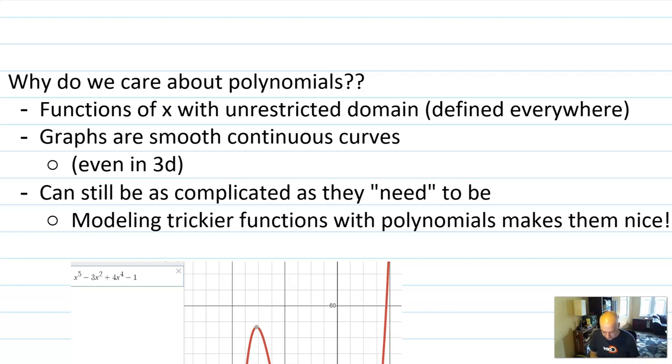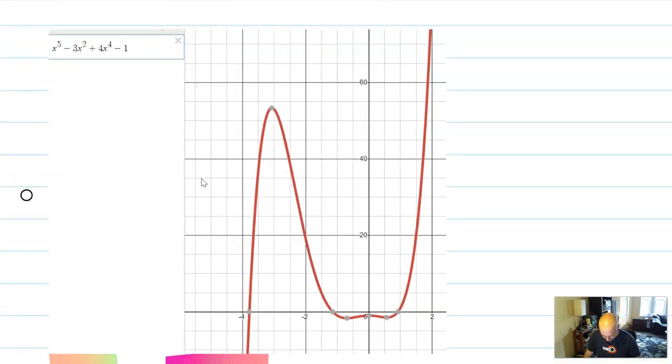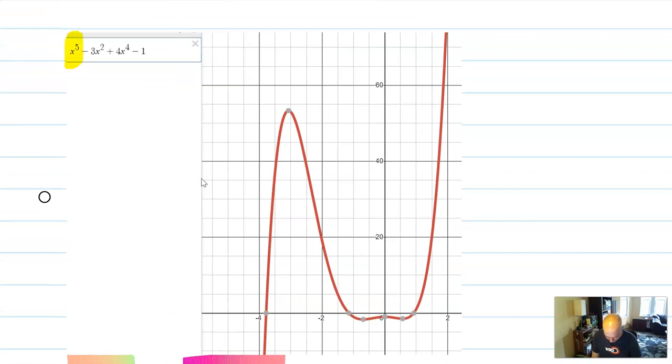The graphs of polynomials, this is the most important property, are smooth continuous curves. Here's an example. I have a couple examples here. This is a fifth degree polynomial. You have no idea in general what the graph of this is, but it's a polynomial, which means that you can fairly expect the graph of it to be something that's smooth and continuous and extends off infinitely in all directions because all x's are valid possible inputs.